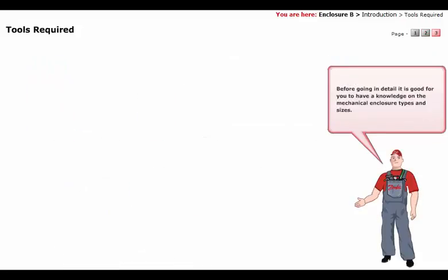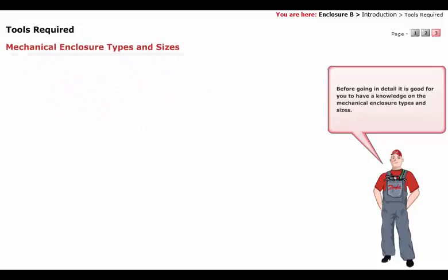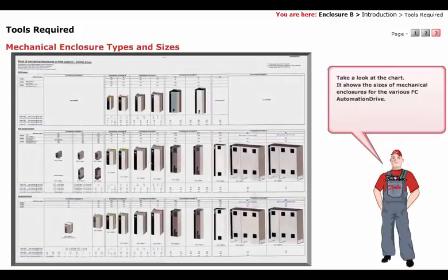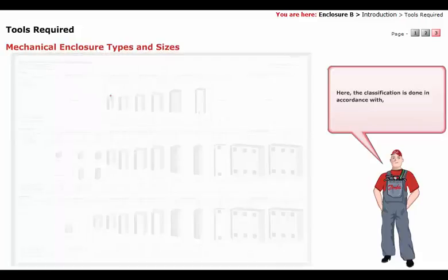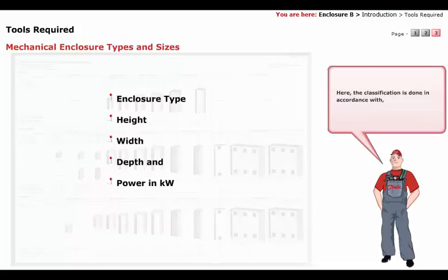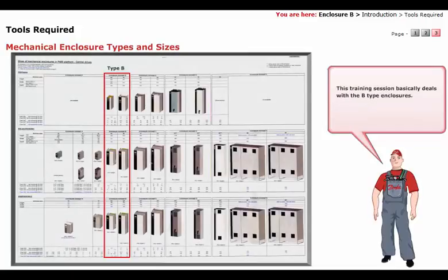Before going into detail, it is good for you to have a knowledge on the mechanical enclosure types and sizes. Take a look at the chart. It shows the sizes of mechanical enclosures for the various frequency converter automation drives. The classification is done in accordance with enclosure type, height, width, depth, and power in kilowatt. This training session basically deals with the B-type enclosures.